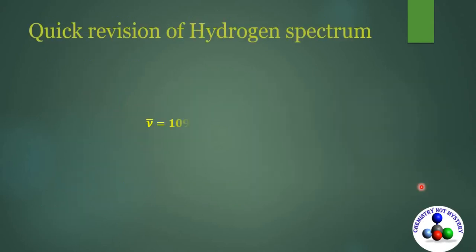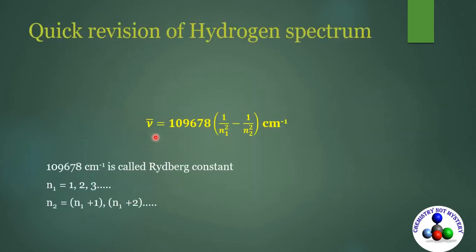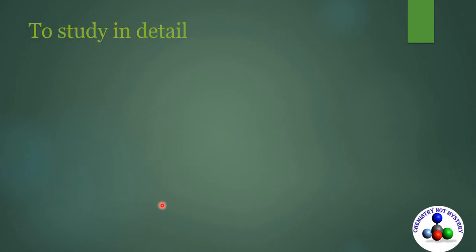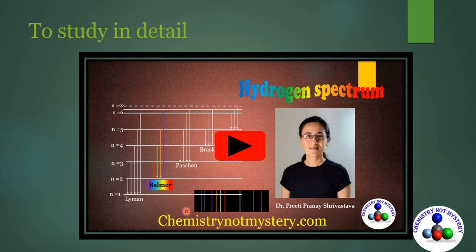Rydberg studied these lines and gave the following equation: nu-bar is equal to 109678 times (1/n1² minus 1/n2²) centimeter inverse. Here, 109678 cm⁻¹ is the Rydberg constant. n1 is the lower energy level and its value can be 1, 2, 3 and so on. n2 is the higher energy level and its value can be n1+1, n1+2, n1+3 and so on. You can watch my video on hydrogen spectrum — the link is in the description box.